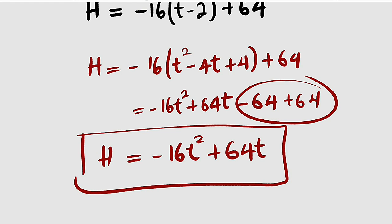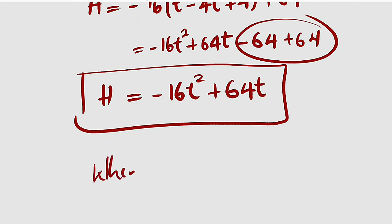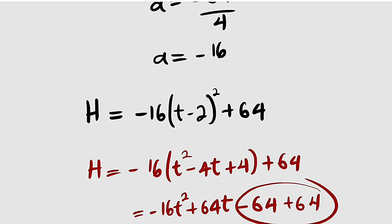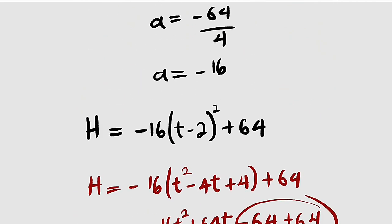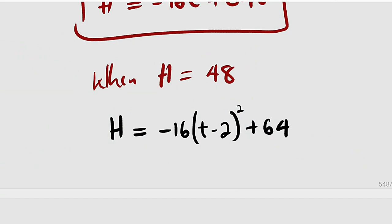But this is not what we are looking for. We are looking for the time, or times, at which the ball reaches 48 feet. So when h is equal to 48 is exactly what we are looking for, and I am going to use the vertex form, which is very simple. Let me use this. So this is the vertex form of our quadratic equation.